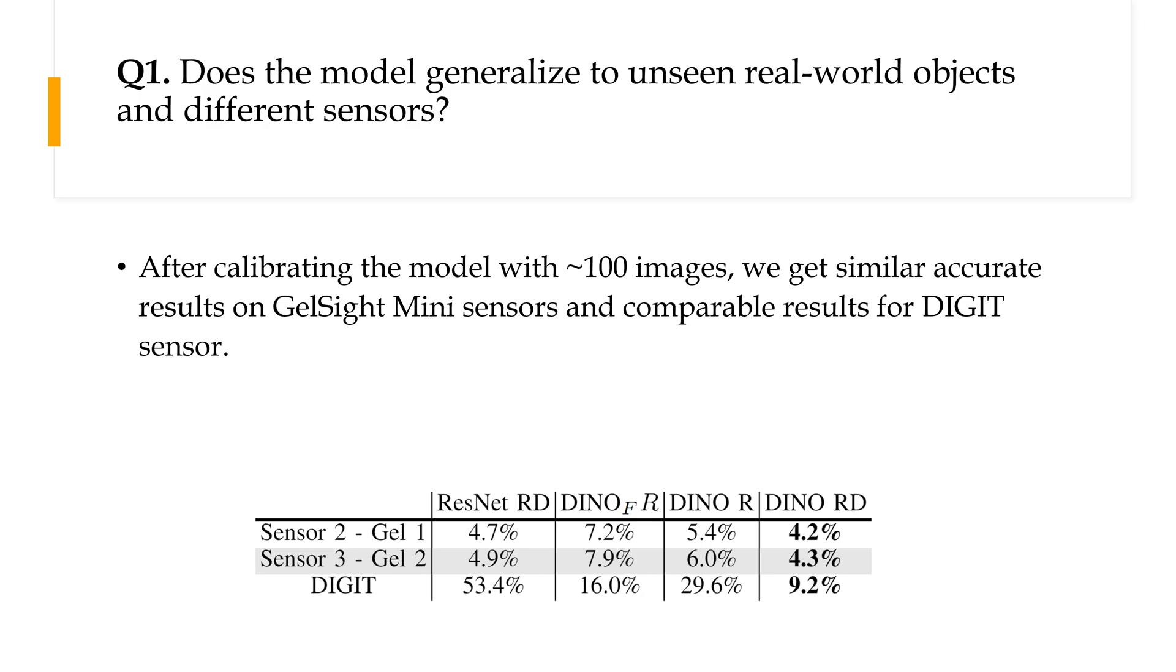Our model demonstrated adaptability, requiring only 100 images to achieve equivalent performance on new sensors. Additionally, we achieved comparable performance when calibrating on DIGIT sensors, exhibiting distinct physical and optical properties.